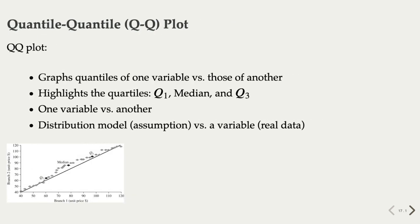When comparing two data distributions, quantile-quantile or QQ plots are especially useful. For example, a QQ plot visualizes the quantiles of one variable distribution against the corresponding quantiles of another. The example shows the distribution of unit price at one branch versus that in another branch. The quartiles Q1, median, and Q3 are all above the diagonal line, indicating Y or branch 2 tends to have a higher unit price than X, which is branch 1.